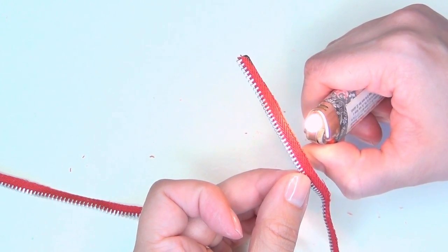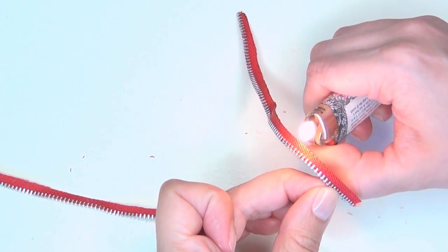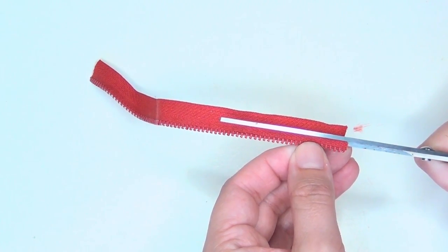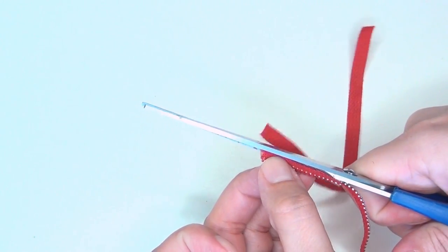Since it's polyester it just melts and the lighter will melt that edge instead of having to seal it with the glue. Be very careful if you're using this method and if you're a child make sure you have an adult help you out.